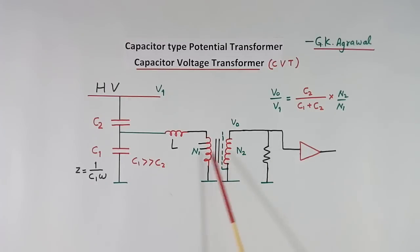Now turn ratio of this transformer is N2 by N1. If voltage at this point is V0, voltage at this point is V1, then V0 by V1 is equal to C2 by C1 plus C2 into N2 by N1.